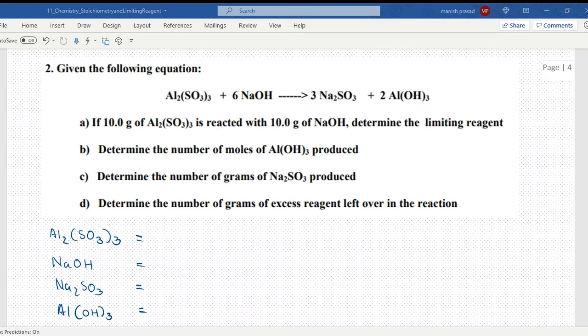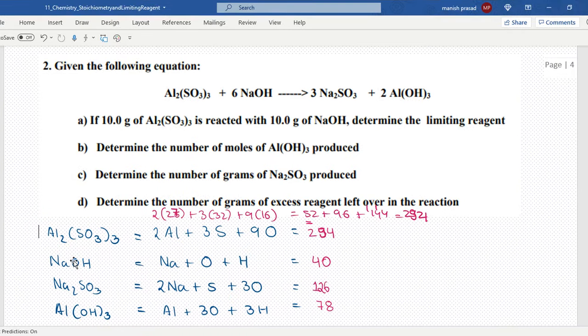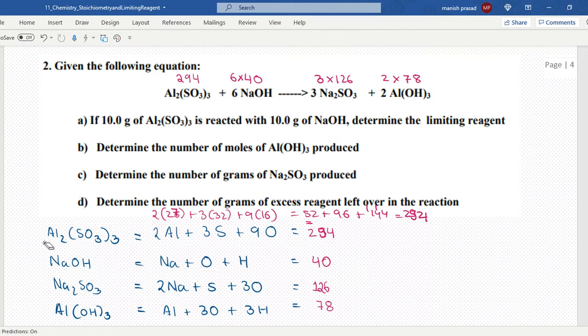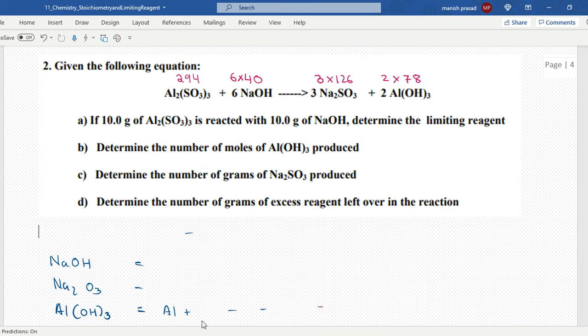I'm writing the answers out here so it becomes easier for us and we get more space to solve the question. So this is 40 molar mass, that means it would be 6 multiplied by 40, and this would become 3 multiplied by 126, and this would become 2 multiplied by 78. We get all the molar masses.